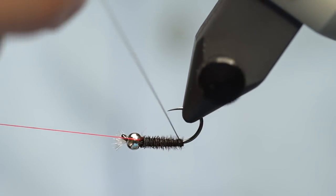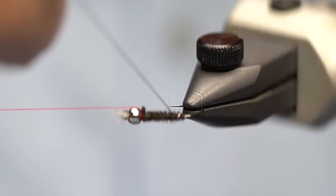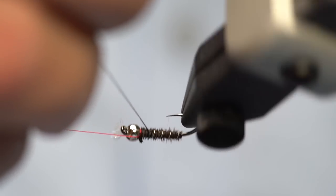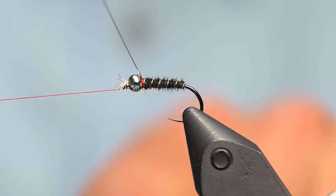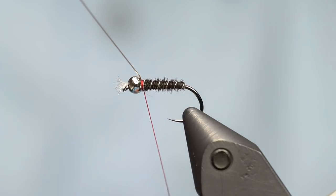Now I'm going to wrap the wire the same direction as the thread and just rib it through, just like you would a pheasant tail or any other sort of nymph. Just spacing wraps. Move that out of the way again. Capture the wire with the thread.